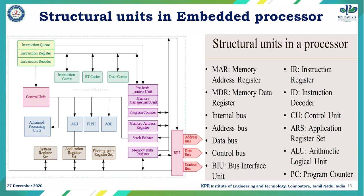Some important blocks in the architecture are the stack pointer and program counter. The stack pointer is used whenever an interrupt occurs — the execution of the program stops at the current instruction and context switches over to the interrupt service routine. The temporary data stored in registers and cache memory must be stored in stack memory, and the stack pointer points to the most recent entry in the stack memory.